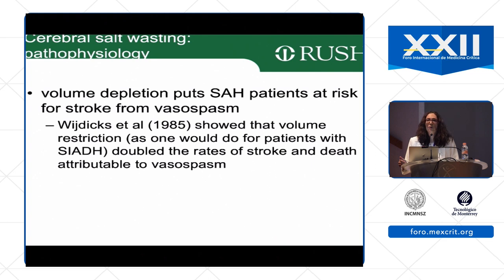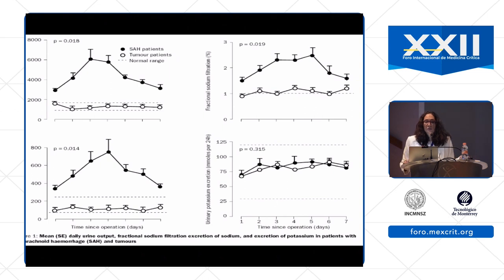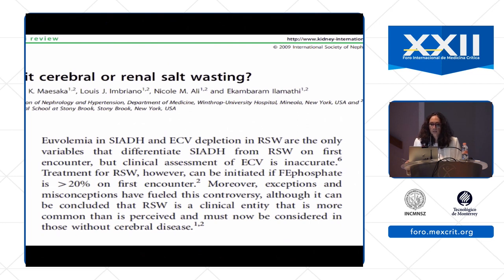Moving on to cerebral salt wasting: the majority of SAH patients developing DCI will have declining sodium. There is disagreement whether this is cerebral salt wasting, renal salt wasting, or SIADH, but evidence shows volume depletion puts SAH patients at risk for stroke if they have vasospasm. In a typical high-grade patient, around day four or five, urine output rises, fractional excretion of sodium rises, and urinary sodium rises — usually within days five to seven.